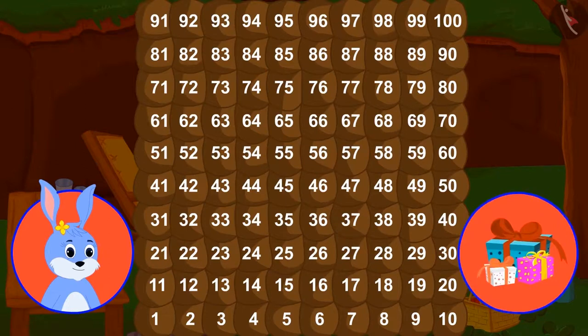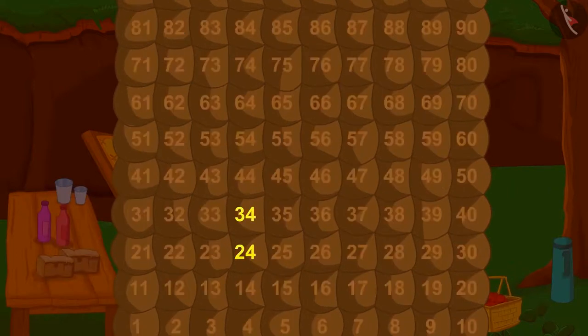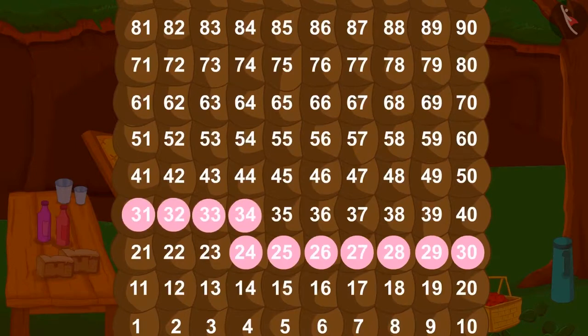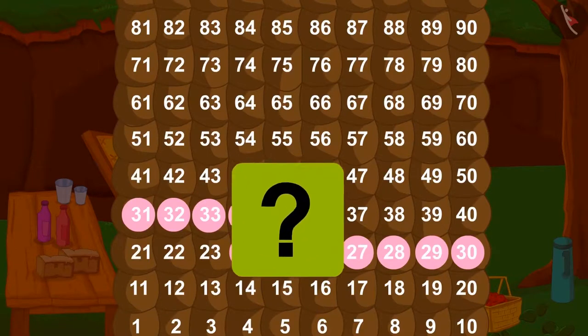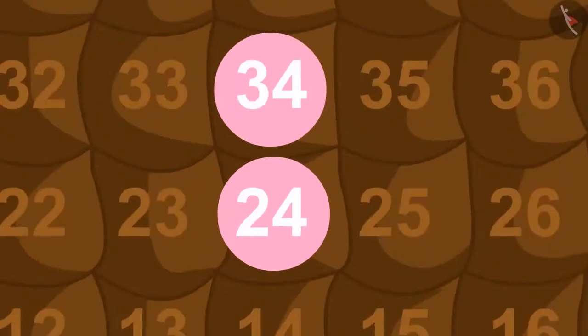First, we will go from room 24 to 34. We can do this one step at a time or in 10 steps like this. Is there a shorter way to go from 24 to 34? Yes, in this way we can jump up and move from 24 to 34.